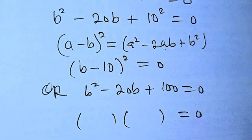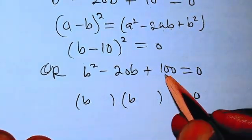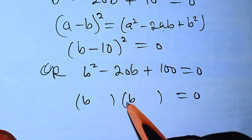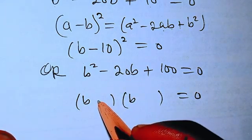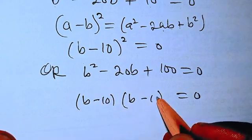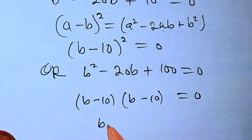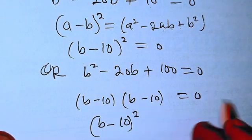So B squared minus 20B plus this, so we can have it in this form. So we have B, we have B here. So look for a particular number that when you multiply them together you're going to have plus 100, and when you add them together you're going to have minus 20B. And that is minus 10, minus 10. So now you can see B minus 10, it can be written as B minus 10 raised to power 2 because they are product of the same factors, equals 0.